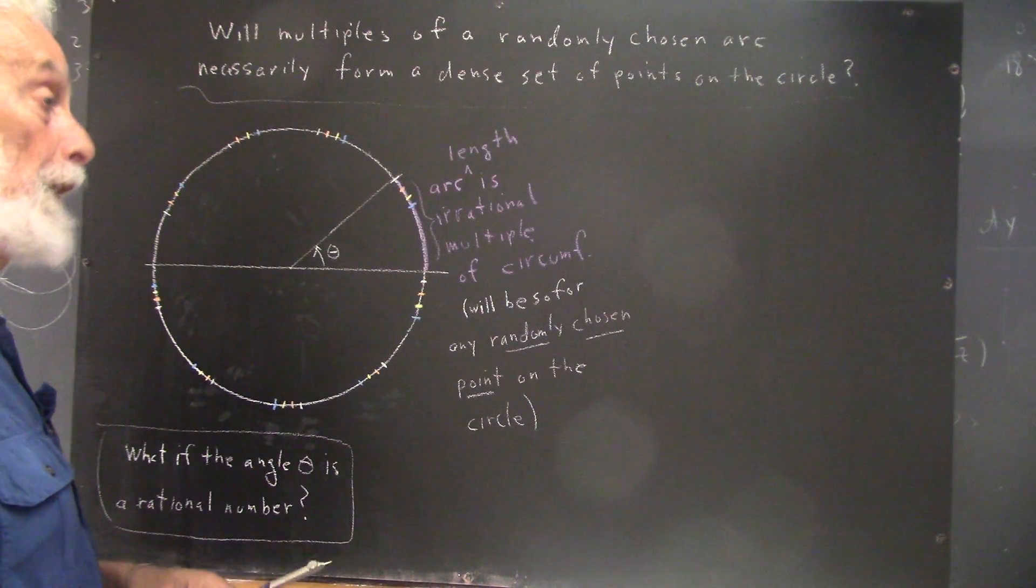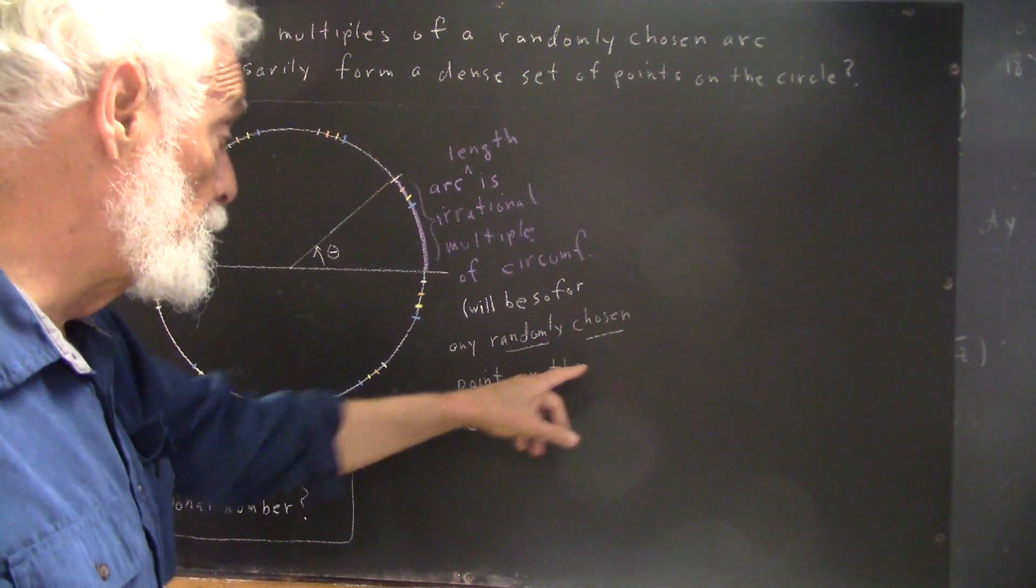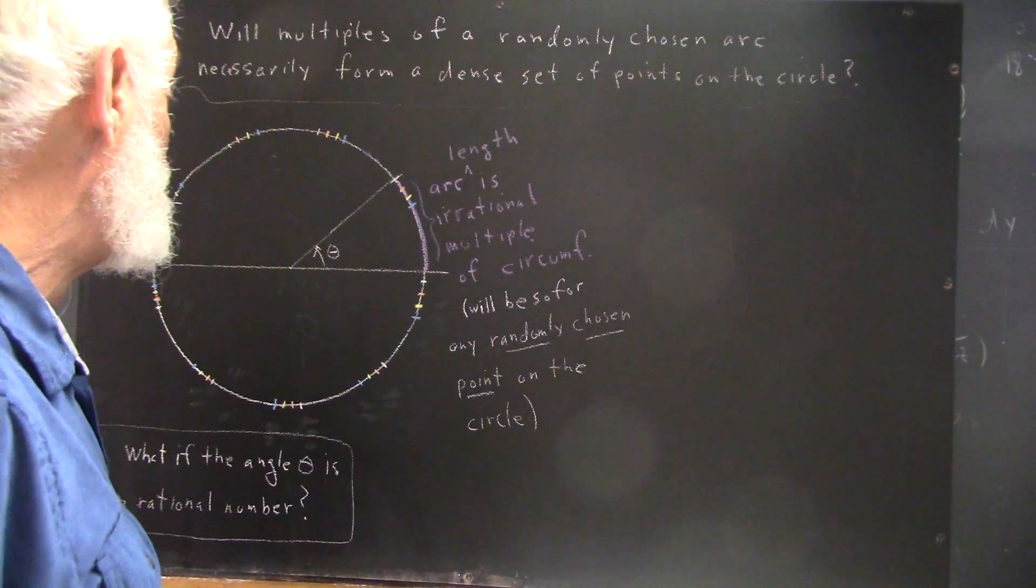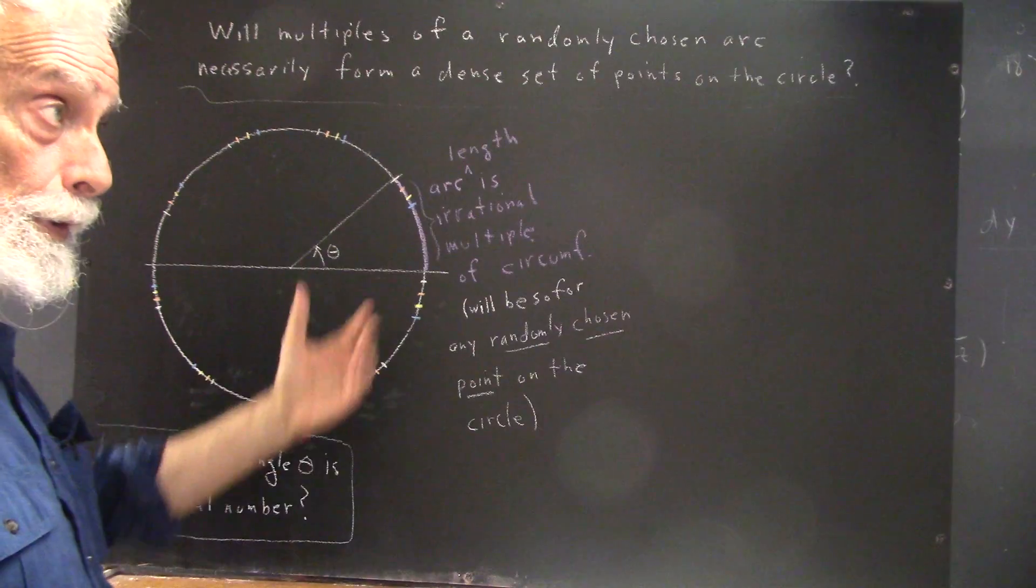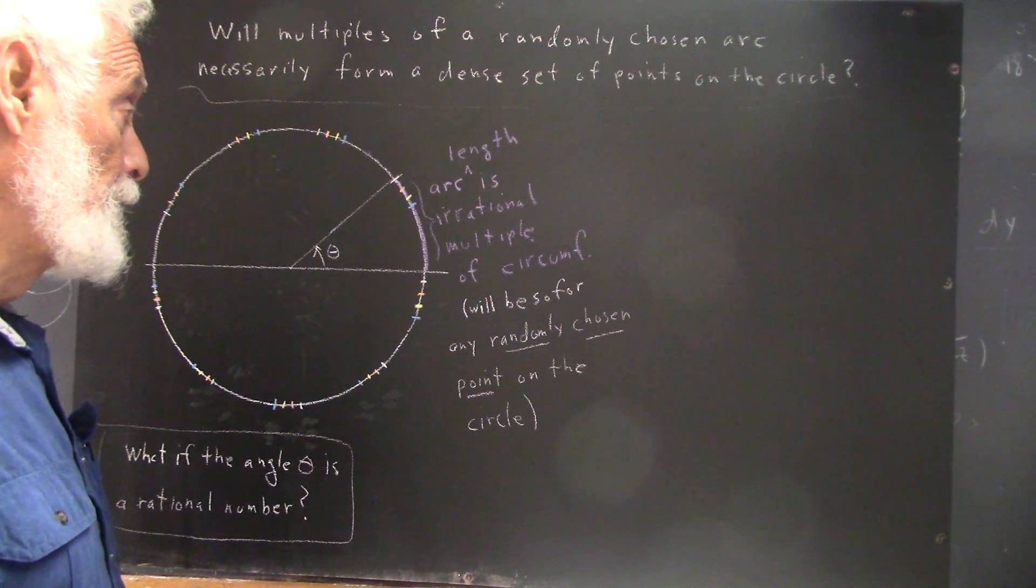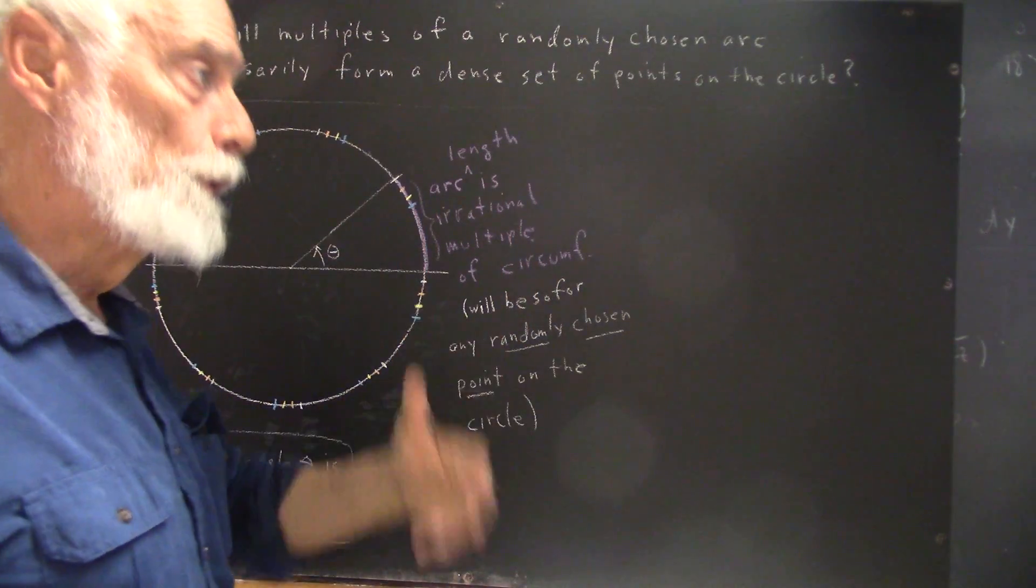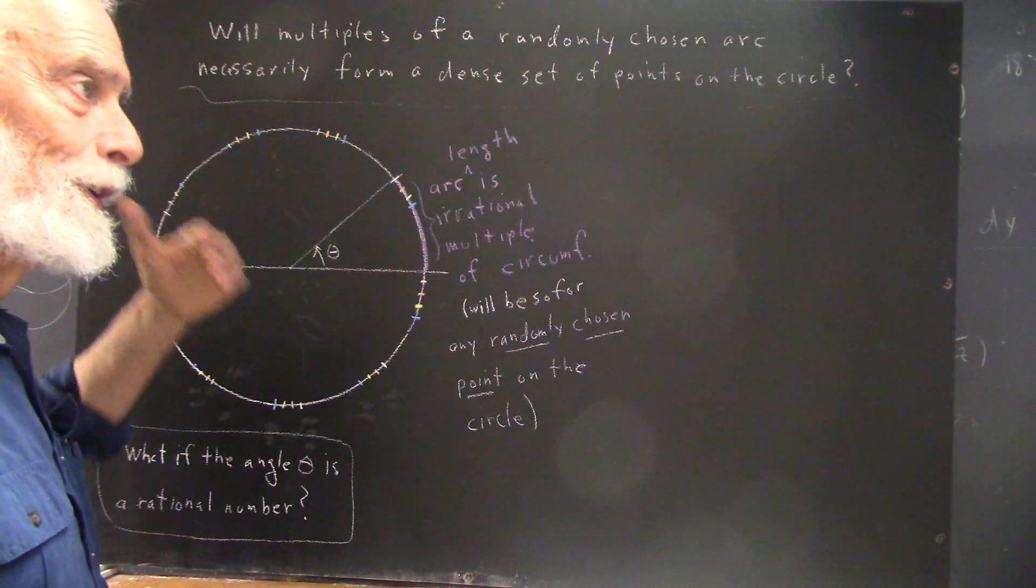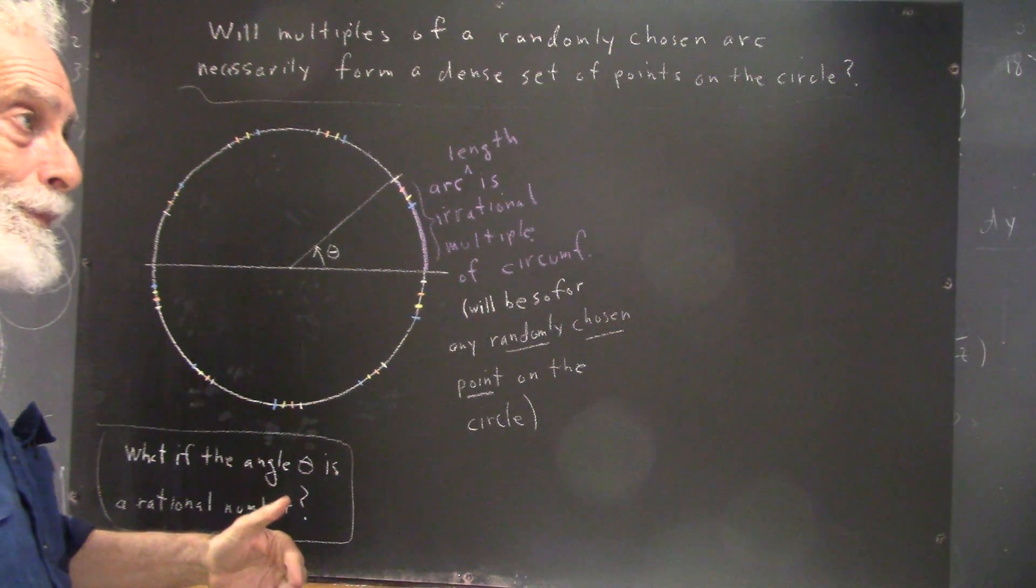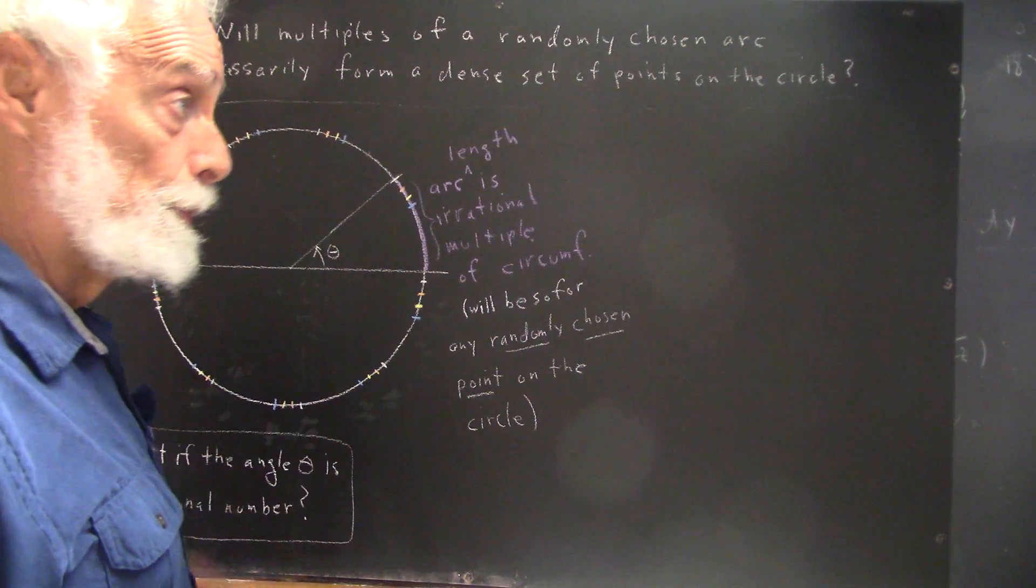and it's necessary that if I have a randomly chosen point on the circle, since there are more irrational points than there are rational points, and since there are so many more irrational numbers than there are rational numbers, it is mathematically impossible that you would choose a rational point.